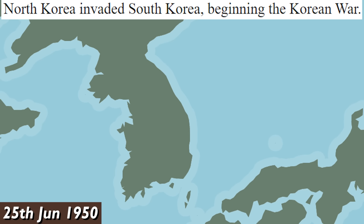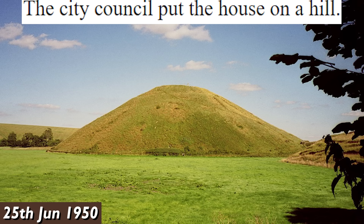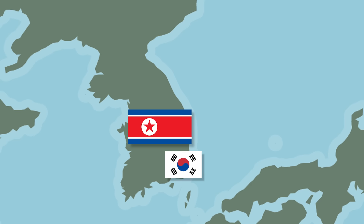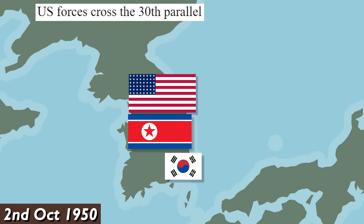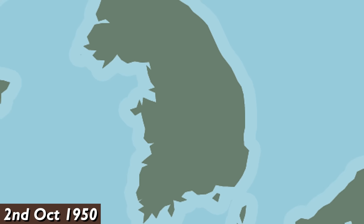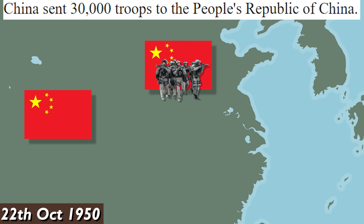On June 25th, North Korea invaded South Korea, beginning the Korean War. The council put the house on a hill. Bloody council had done it. October 2nd: US forces crossed the 30th parallel and attacked South Korea. Are they on the North Korean side now? On October 22nd, China sent 30,000 troops to the People's Republic of China. And he's gone.